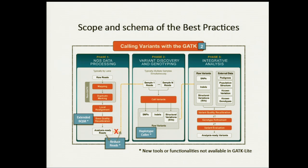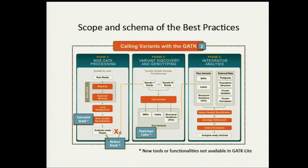In the pipeline diagram, the blue boxes indicate things that exist only in the full version versus the light version. Everything without blue boxes exists in the light version. These are the main three differences. For base quality recalibration, the same functionality exists in both, but in the full version we have extended this tool — it's much faster and produces better recalibration results that are used in the next phase.